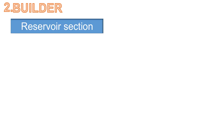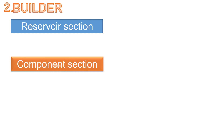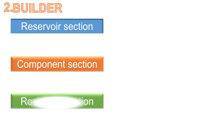In the Builder, I will introduce the reservoir section, which will provide the grid code structure and the reservoir properties for your model. In the component section, we will talk about the Lewis model for your field data. Next, in the rock fluid section, we will introduce the relative permeability curves for your reservoir model.